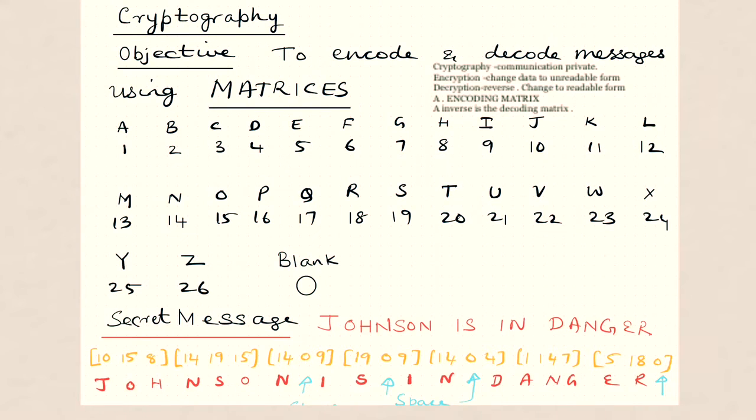Now suppose you want to send a message. We all know this matrix property that in general when I take A multiplied with A inverse, it is equal to I. This is a unit matrix. So if I take A inverse into A, that is also I.